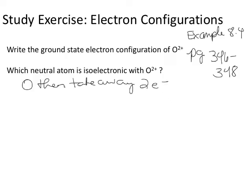The electron configuration is kind of like an address — you have a city, a state, a zip code, a street address, and a house number. Most of the stuff in chemistry, unless it's nuclear chemistry, has to do with chemical bonds — covalent bonds, ionic bonds. The bonds have to do with where the electrons are going, so we need to know where the electrons are.